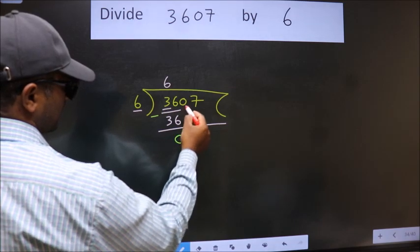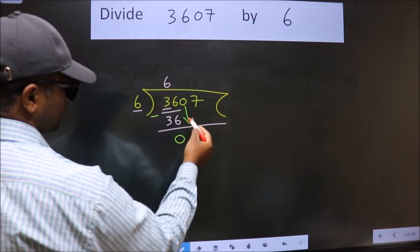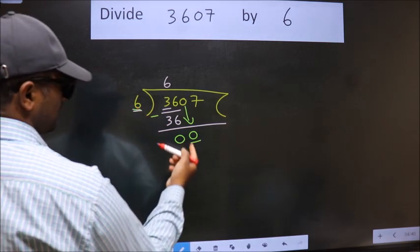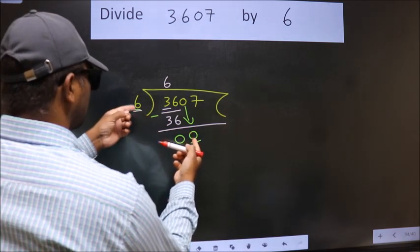After this bring down the beside number. So 0 down. Now here we have 0. Here 6. 0 is smaller than 6.